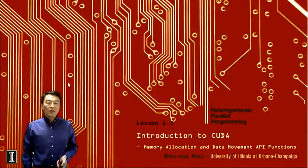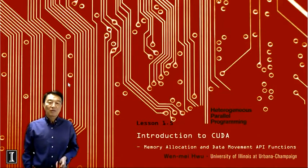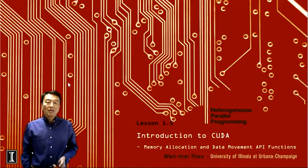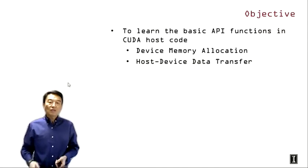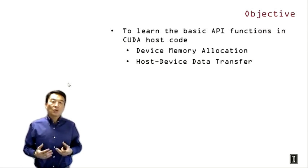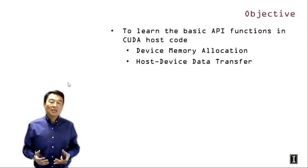Hello, everyone. Welcome back to the heterogeneous parallel programming class. This is lecture 1.5, Introduction to CUDA. We are in the memory allocation and data movement API functions part. The objective of this lecture is to help you learn the basic application programming interface functions, or API functions, in CUDA host code.